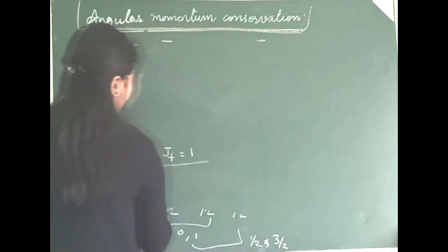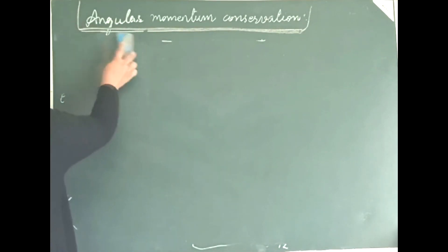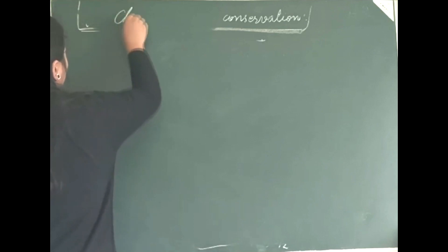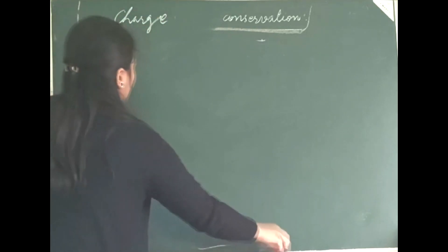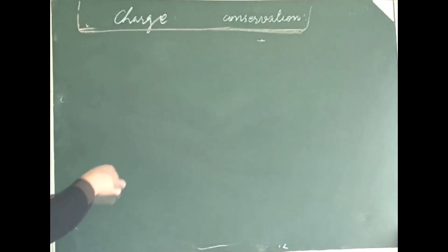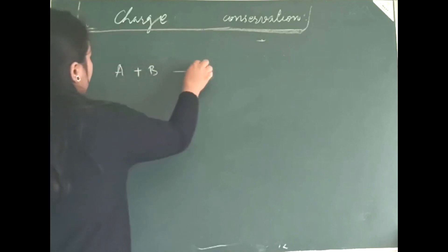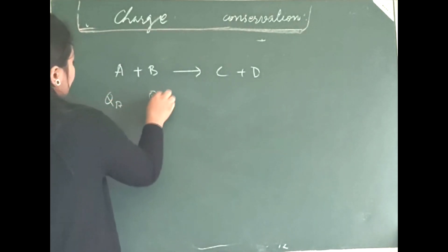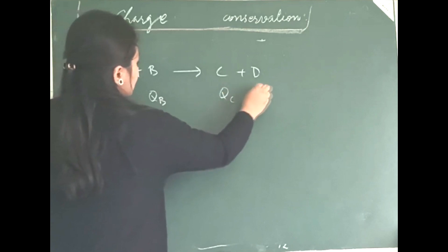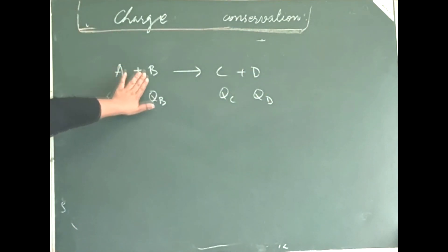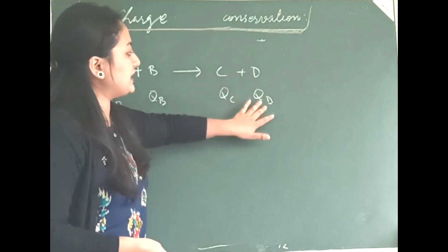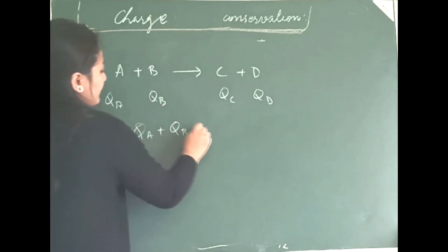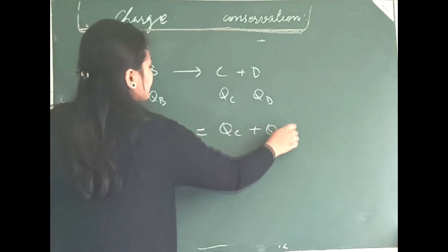Now, we will do a simple conservation, which again is your universal conserved quantity. It is your charge conservation. I think this is the most simplest of all. What you have is, you have your interaction A plus B going to your C plus D. You have the charges as follows. Suppose for A, it is QA, for B, it is QB, for C, it is QC and for D, it is QD. Then, you must have, from your charge conservation, you must have this.